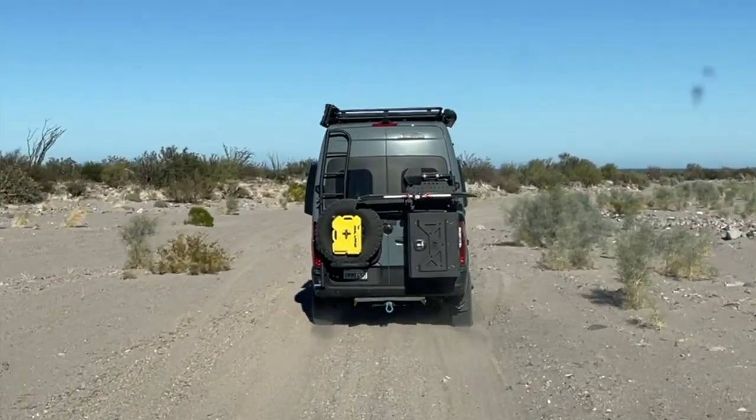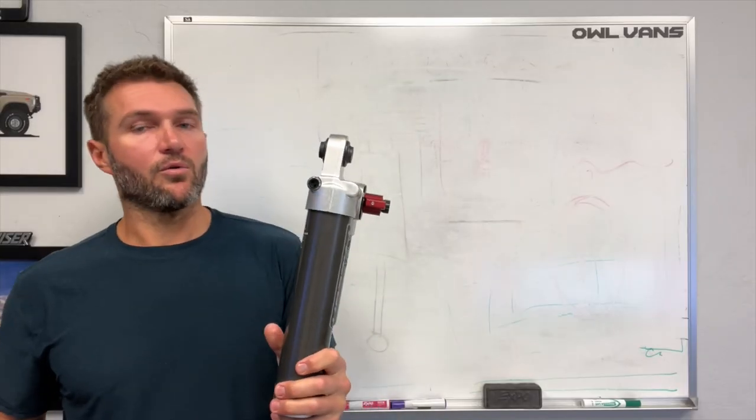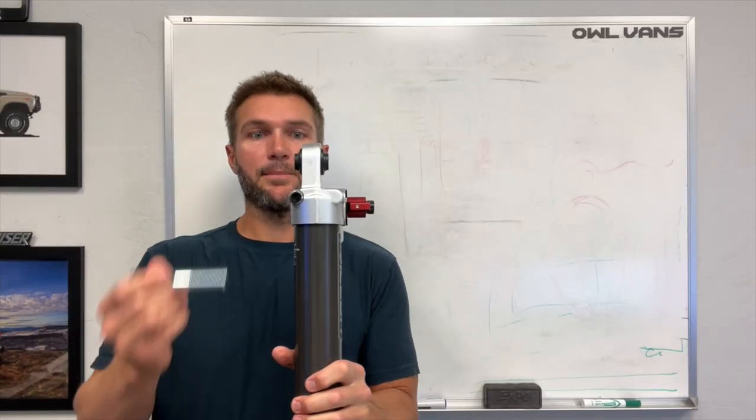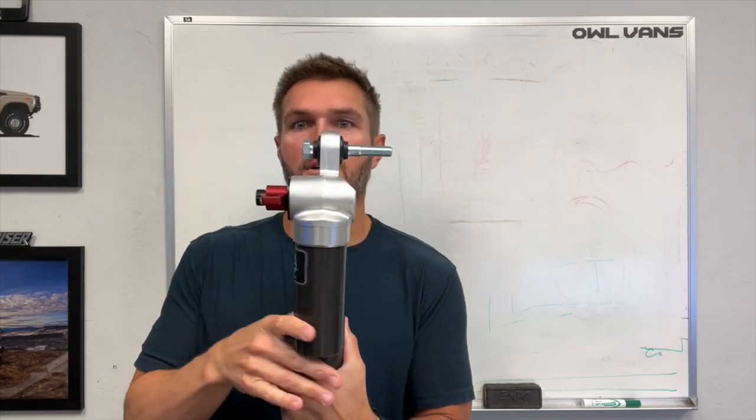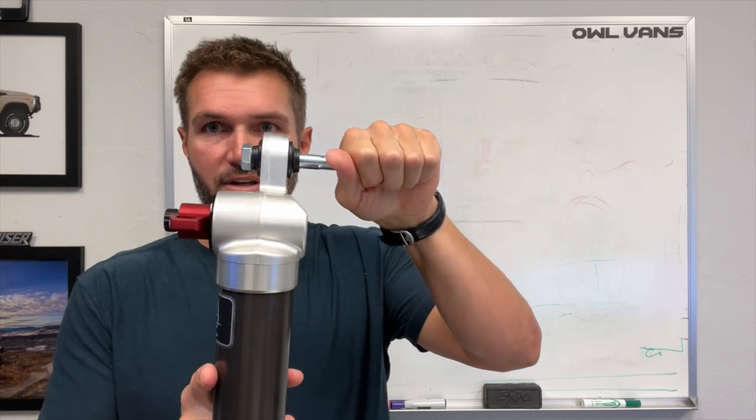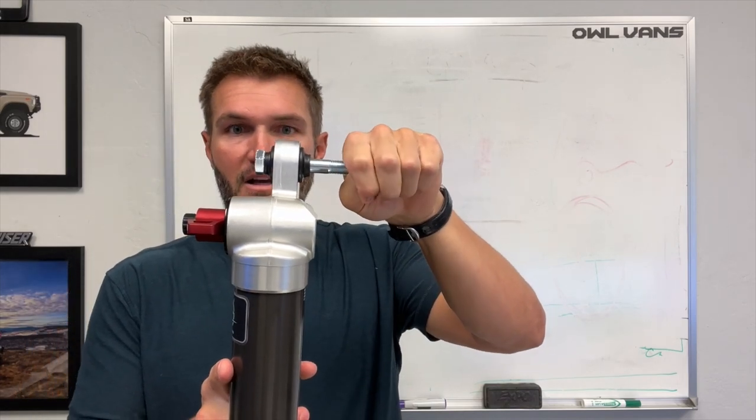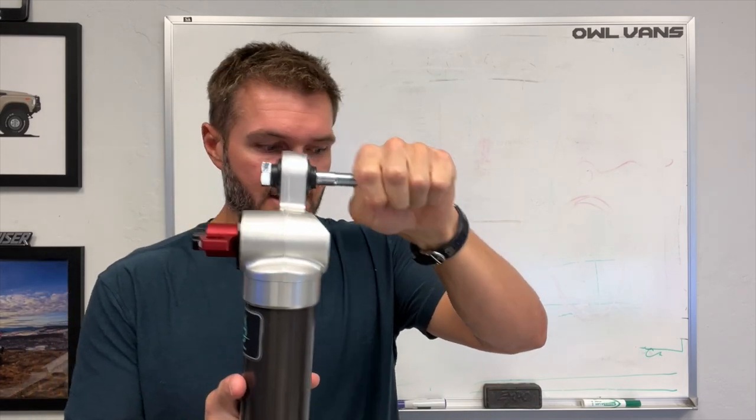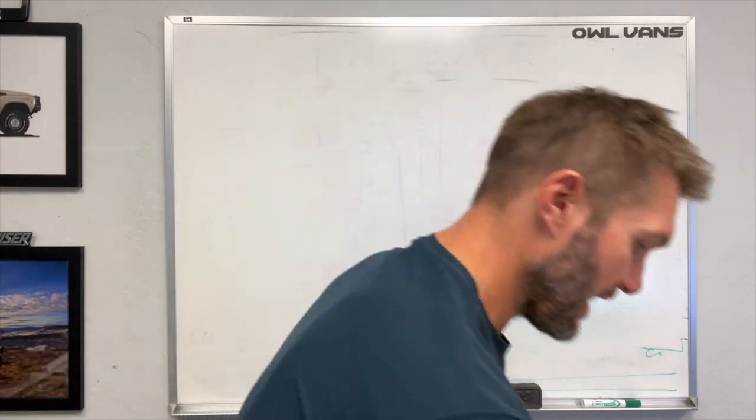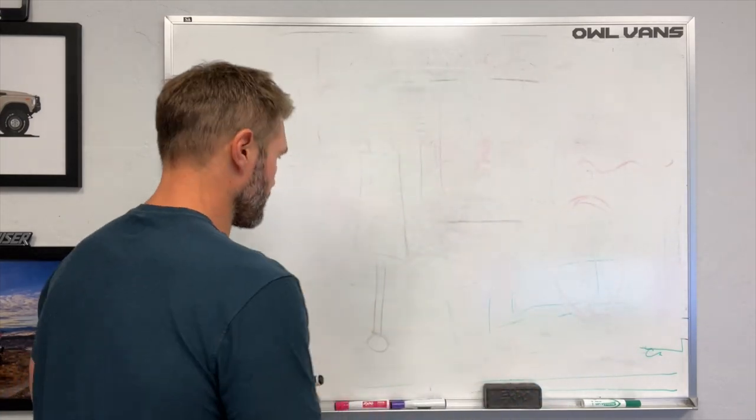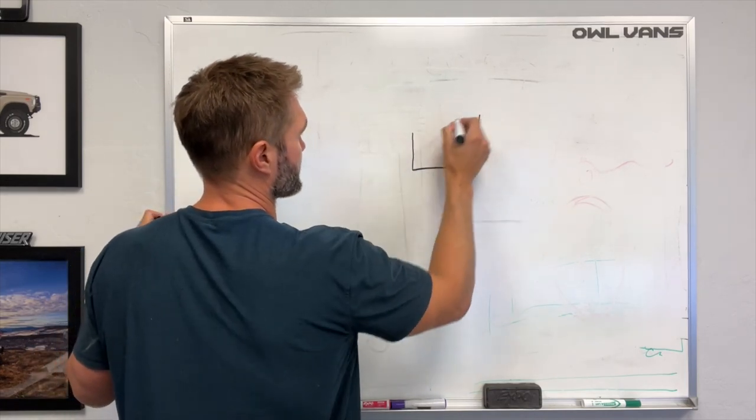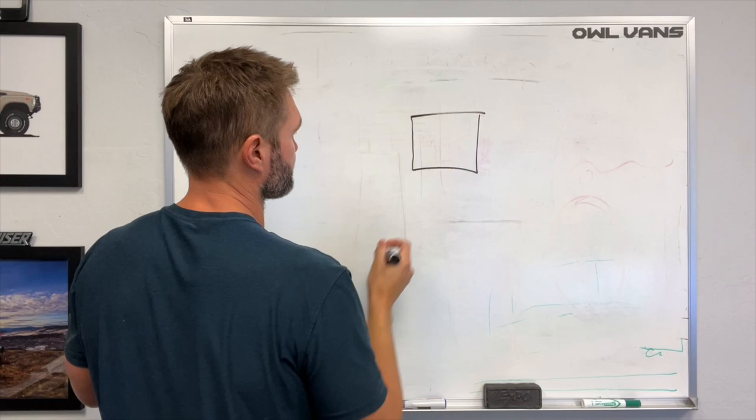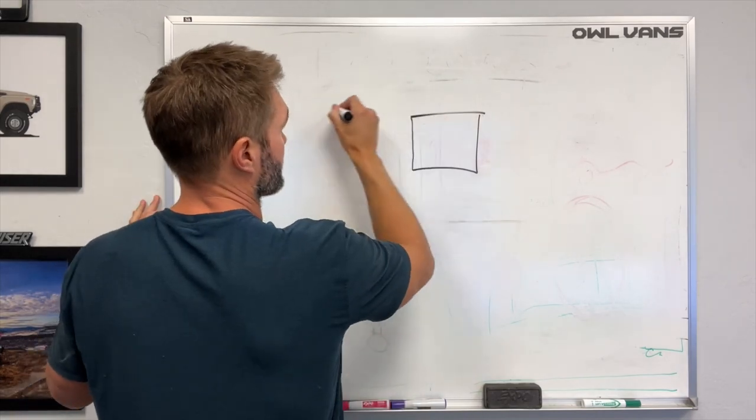The way the shock mounts to a vehicle or to a sprinter van is this. The top of the shock goes this way, has a single bolt that threads into the unibody of the vehicle and you can see it's cantilevered. You can see how much leverage that shock has. So let's draw this here, we've got, we'll call this the unibody of the vehicle. The rest of the vehicle is kind of up here.